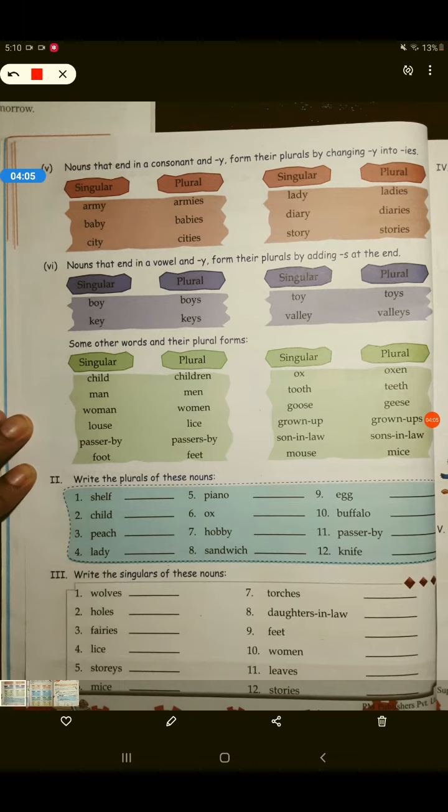Children, हम सब लोग already ये सब चीज़े use कर रहे हैं. It's just that यहाँ पर इसको एक particular tabular form में दिया है. Otherwise, we all are using these things while we are reading English. In your literature, we are using this. In your grammar, we are using this. Daily life, we are using all these things, okay?